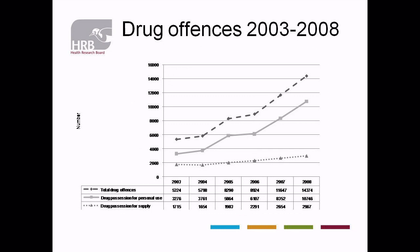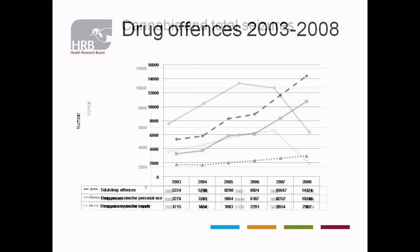If we look at drug offences more recently, again we have seen a consistent increase. The broken line at the top is total drug offences, the second one is drug possession, and the third one is supply. We can see that supply is relatively consistent, while the trend in the total number is really determined by simple possession.